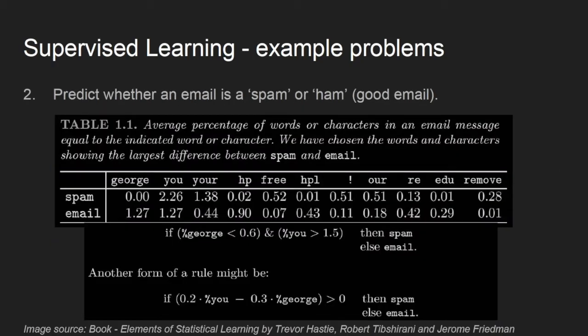Let's take another example, whether an email is spam or ham. Ham is good email. Here the predicted value will be from a set of two values, that is, spam or ham, which is countable. This type of response variable is called categorical or qualitative.